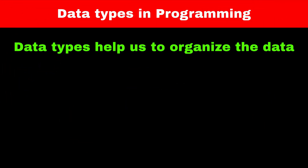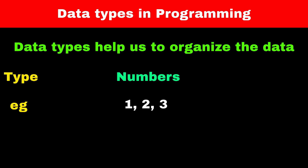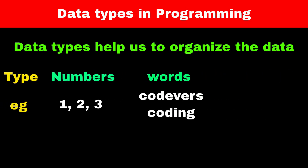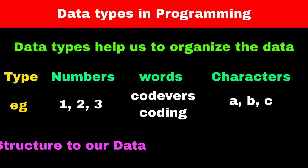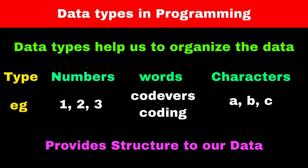Just like the Animal Kingdom, in programming we want our data to be organized. In programming, data can be numbers, words, or characters. Data types help us define what kind of data a variable can hold and how we can use it. They provide structure to our data, making it easier for the computer to understand and process.